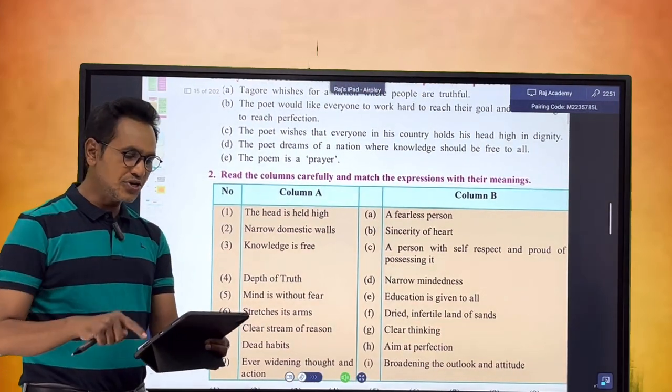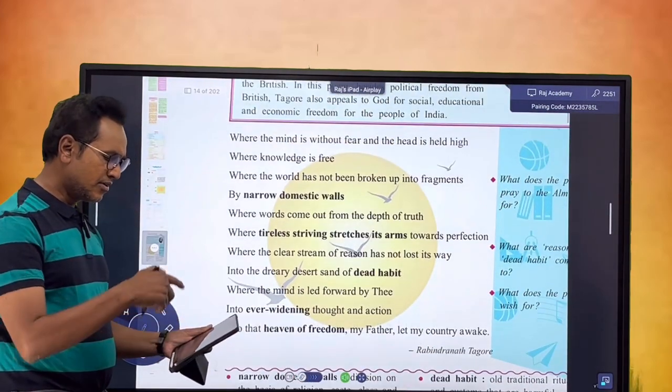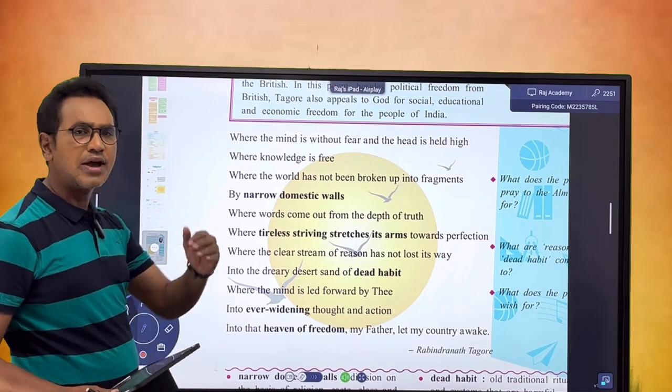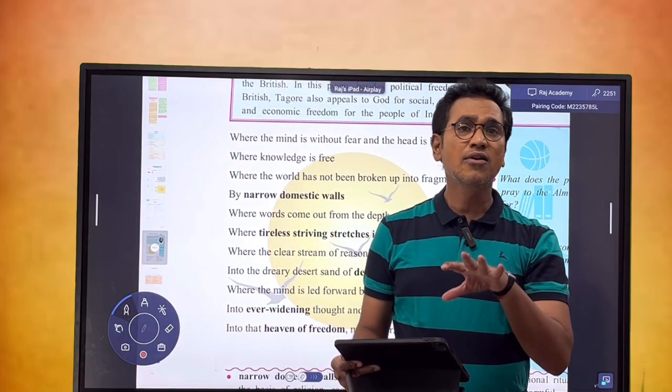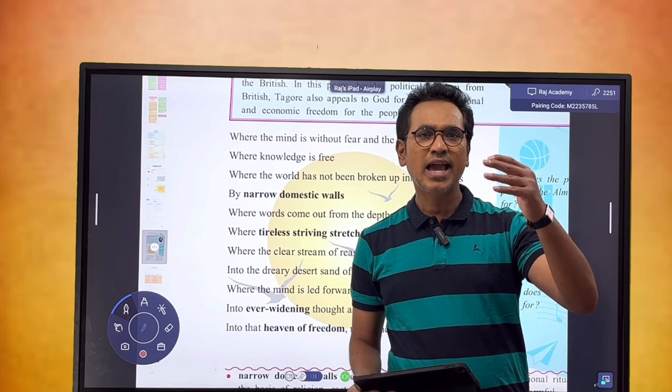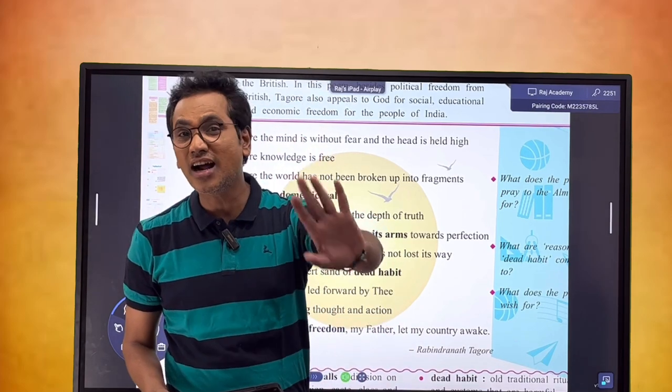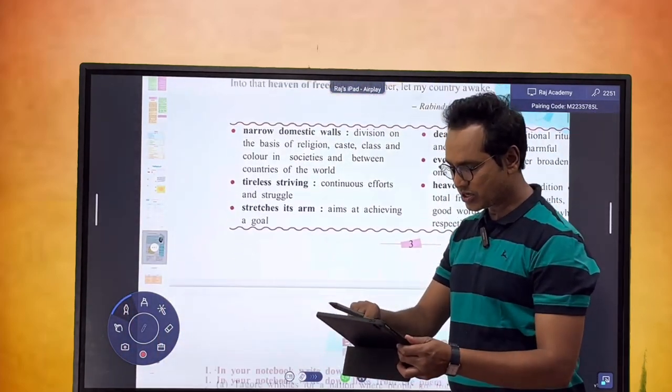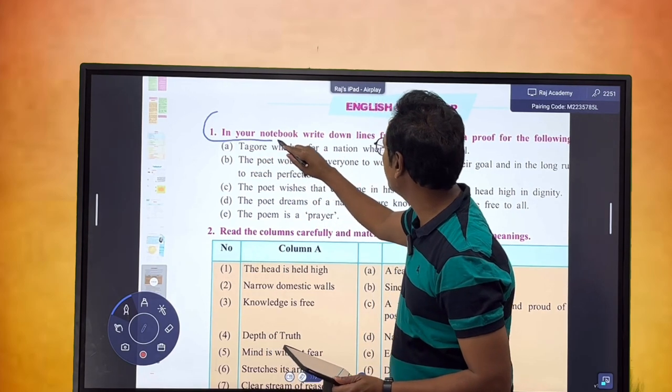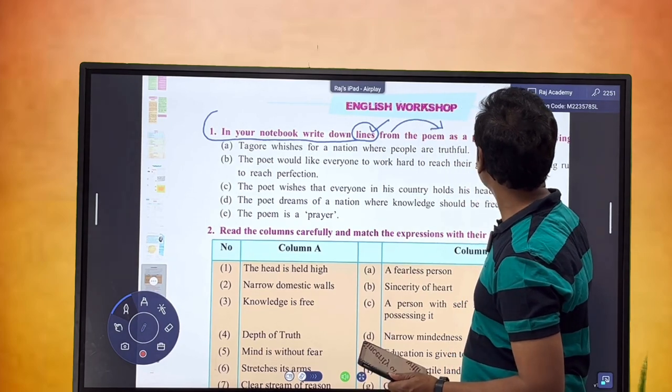The poet dreams of a nation where knowledge should be free to all. We shall find where knowledge is free. This is the line. I will not take each and every example of the workshop. Fewer examples will be interpreted, analyzed, and explained by me.